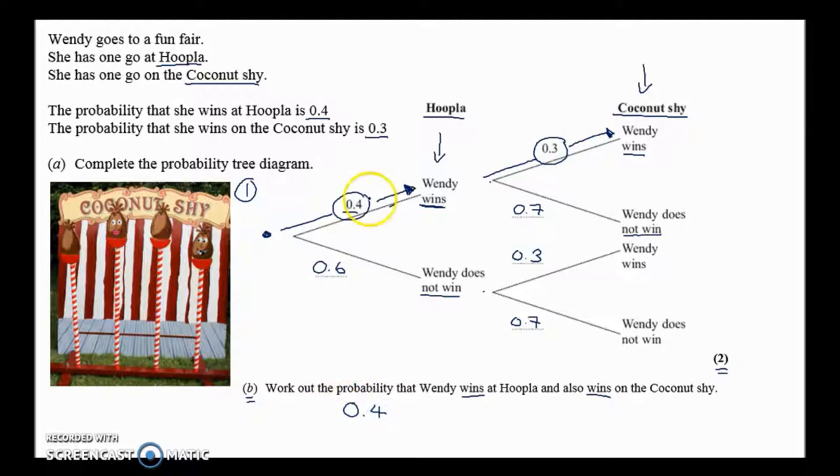Okay, so it's like a 40% chance of winning hoopla. Then we're saying, right, we've got 40%, then we've got a 30% chance of winning coconut shy. So it's almost like you're doing 30% of 40%. You times those together, and that will give you the overall chance of winning both, one after the other. So 0.4 times 0.3 is going to be 0.12.